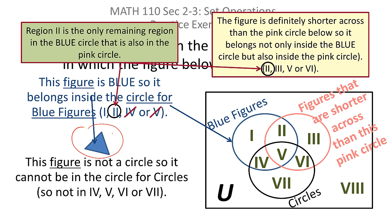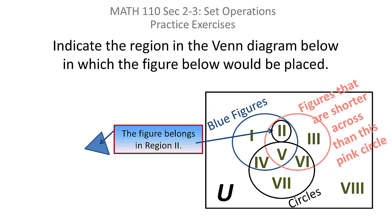We already narrowed it down to one or two. It can't go in region one because if it were there, it wouldn't be inside the pink circle — which it has to be. The only region in that Venn diagram where this blue, relatively small triangle belongs is region two: inside the blue circle, inside the pink circle, but not inside the circle circle. Fairly simple if you just take it one step at a time.